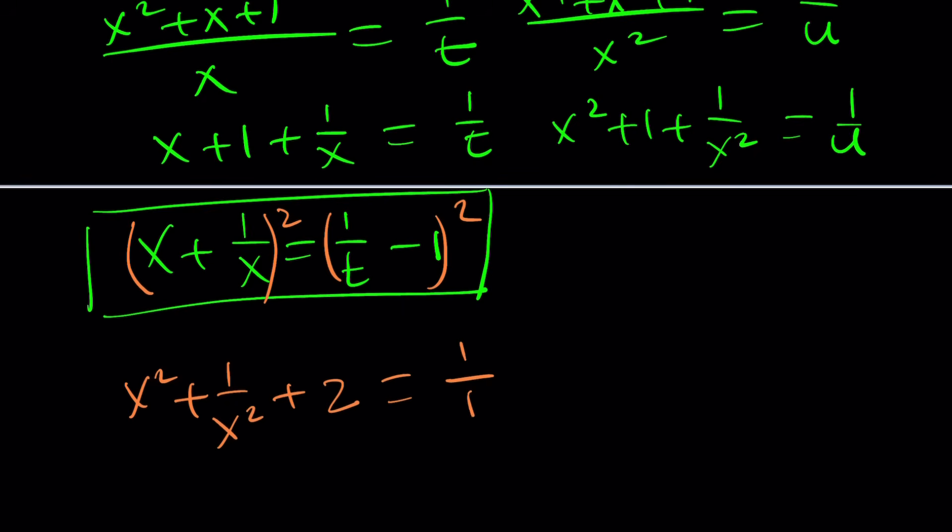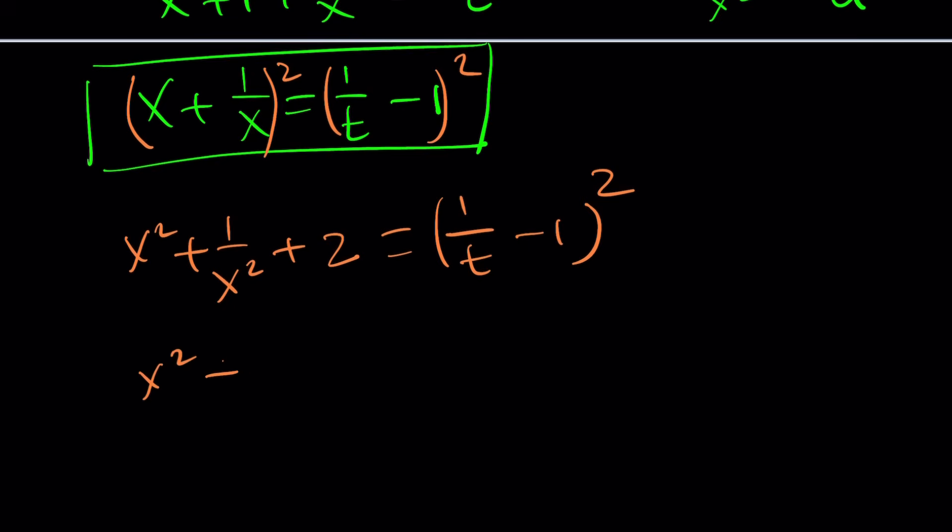That's going to give me x squared plus 1 over x squared plus 2ab, which is going to give me 2, equals 1 over t minus 1 quantity squared. Let's leave it like that for now. And then from here, I'd like to isolate this. I wanted to subtract 2 from both sides. That should give me, and again, leave it like this. Don't expand. Okay.